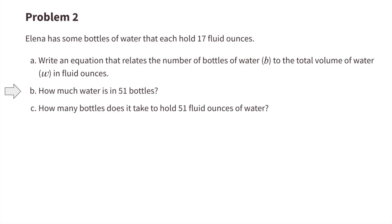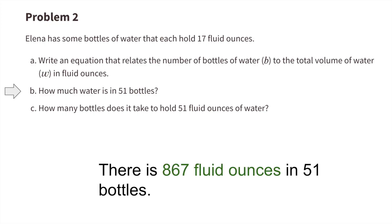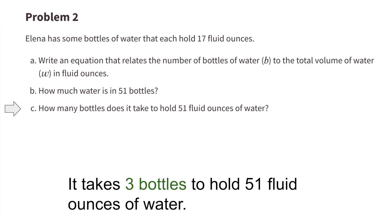Part b: how much water is in 51 bottles? There are 867 fluid ounces in 51 bottles of water. Part c: how many bottles does it take to hold 51 fluid ounces of water? 51 divided by 17 equals 3. It takes 3 bottles to hold 51 fluid ounces of water.